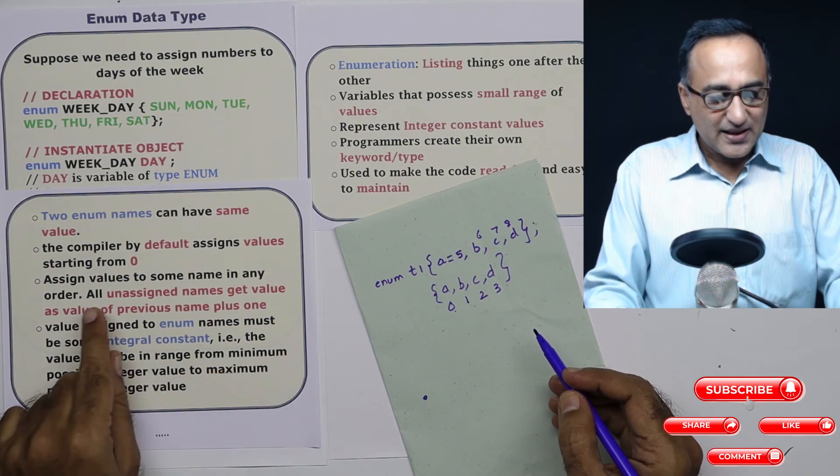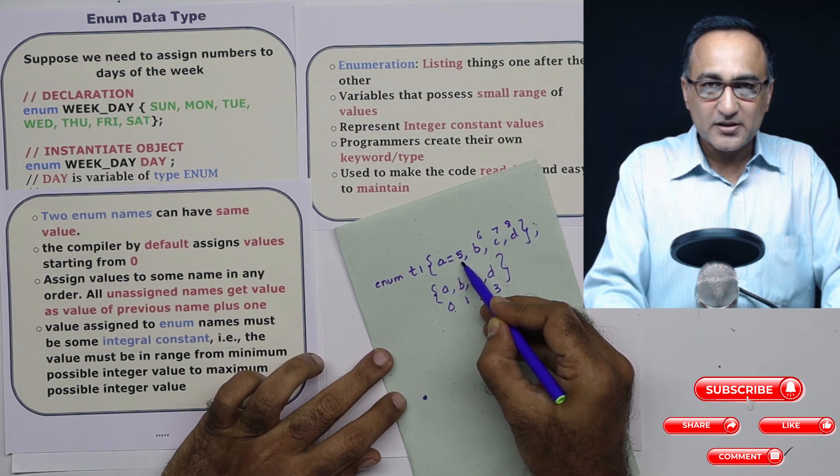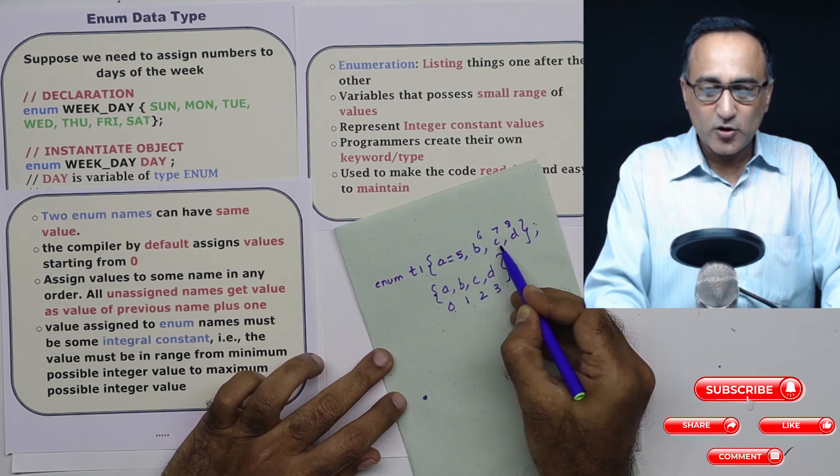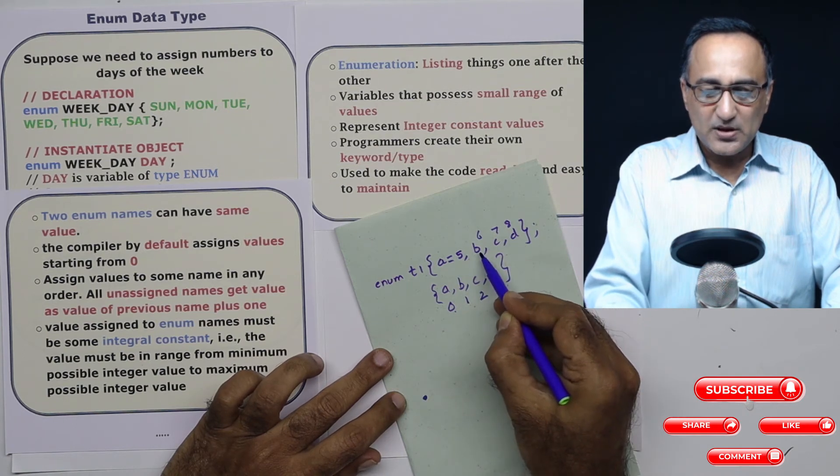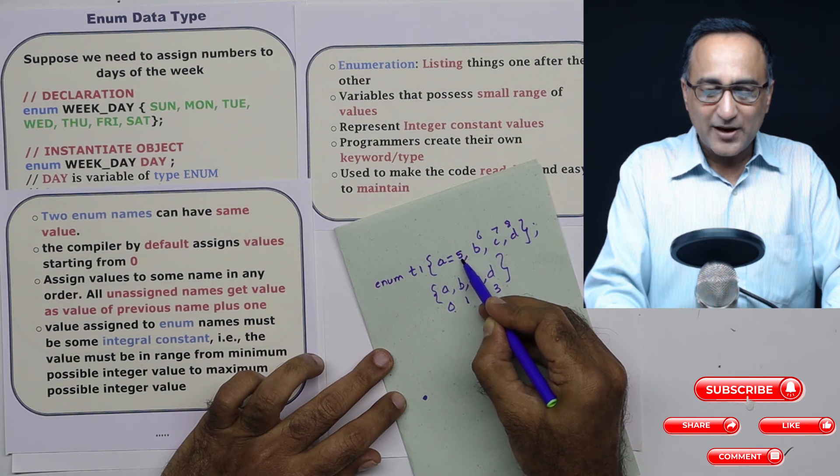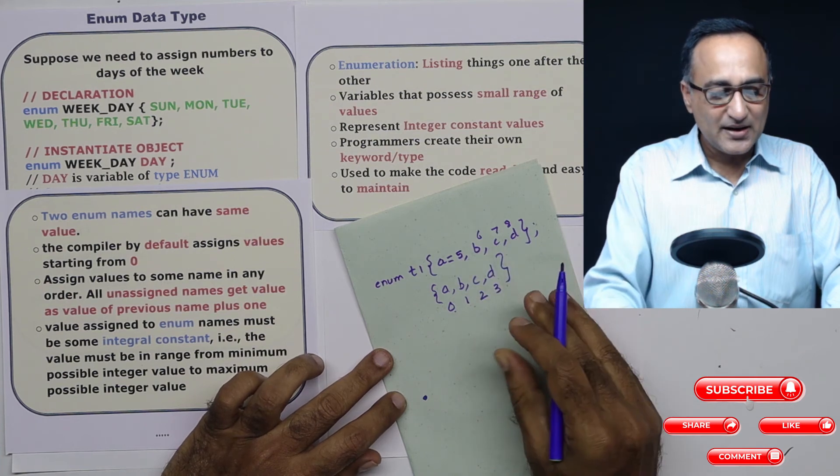Suppose what you do is like here, what you have done is you have given value to one of these enumerators or one of this listed item, but you have not given item values to b and c and d. So what will happen is b will take 1 plus the value of a so a was 5. So b will be 6, c will be 7 and d will be 8.